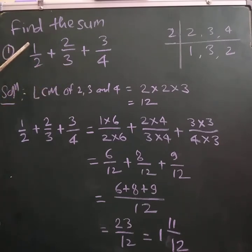See here, the example is given: 1/2 + 2/3 + 3/4. Now we have to find out the sum of these unlike fractions. Why unlike fractions? Because the denominators are different.